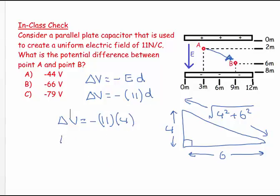So delta V would equal minus 44 volts. Now, it is a negative sign if my displacement is in the same direction as my electric field. And so going from A to B, I would say it is negative 44 volts. If I went from B to A, it would be positive 44 volts.